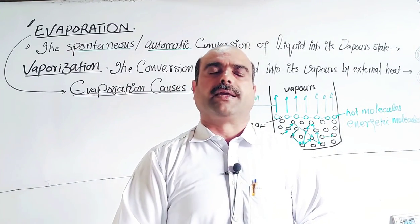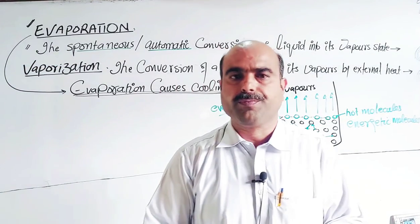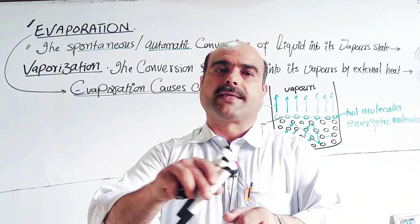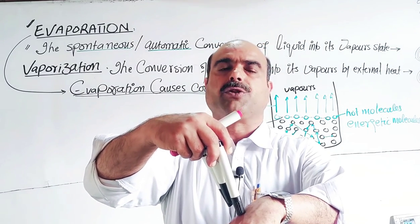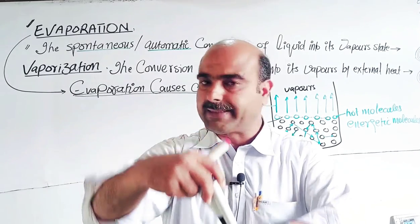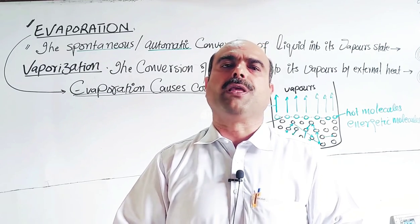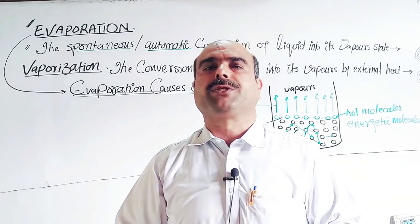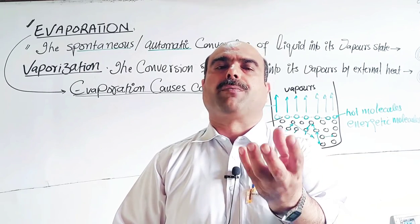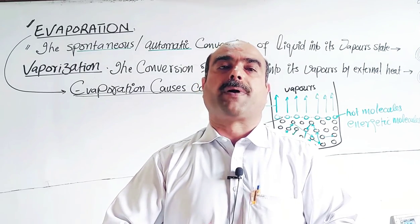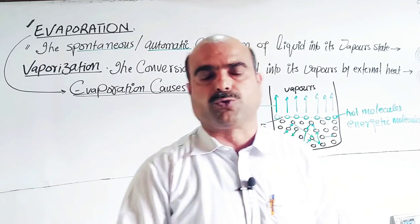A practical example of evaporation causing cooling: if we apply petrol or spirit on our skin, the spirit evaporates and we feel coolness. Spirit and petrol molecules have weak non-polar intermolecular attractive forces. Our body temperature is 37 degrees, so the body's heat is absorbed and used by the spirit or petrol molecules to break their intermolecular attractive forces. As these molecules evaporate, the skin temperature drops and we feel cold.